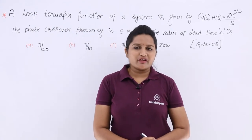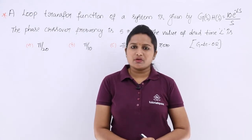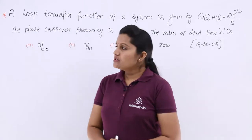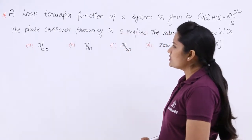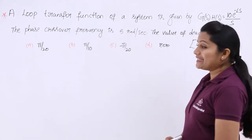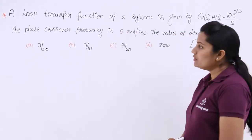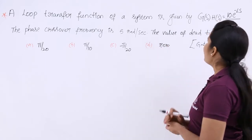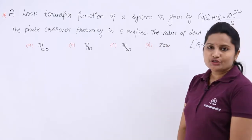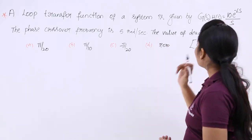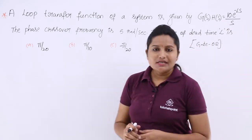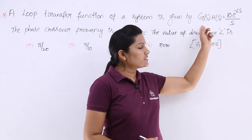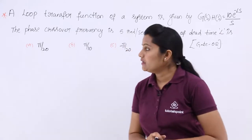In this video, we are going to solve one more gate problem related to phase margin. We can observe this problem given in Gate 2002. A loop transfer function of a system is given by G(s)·H(s) equal to 10 times e to the power minus Ls divided by s. This is the loop transfer function given.